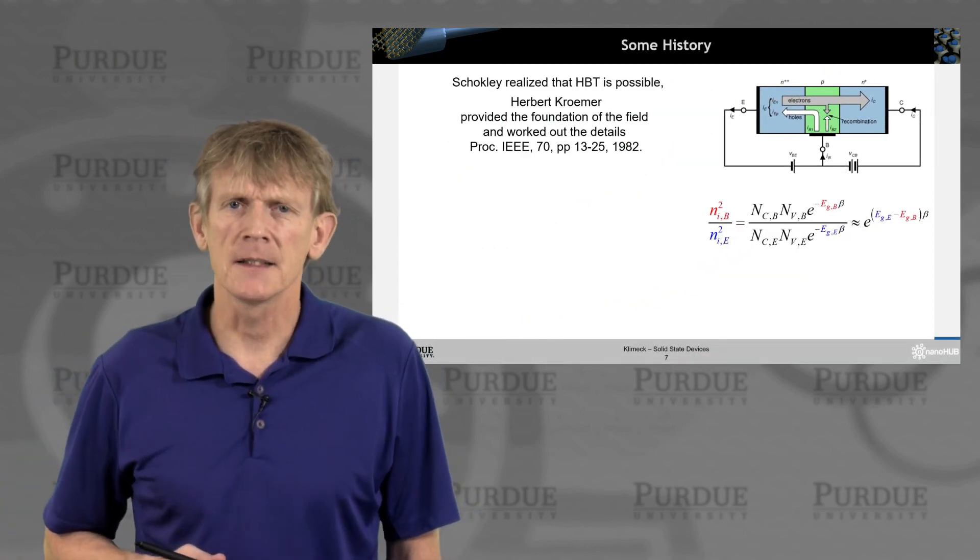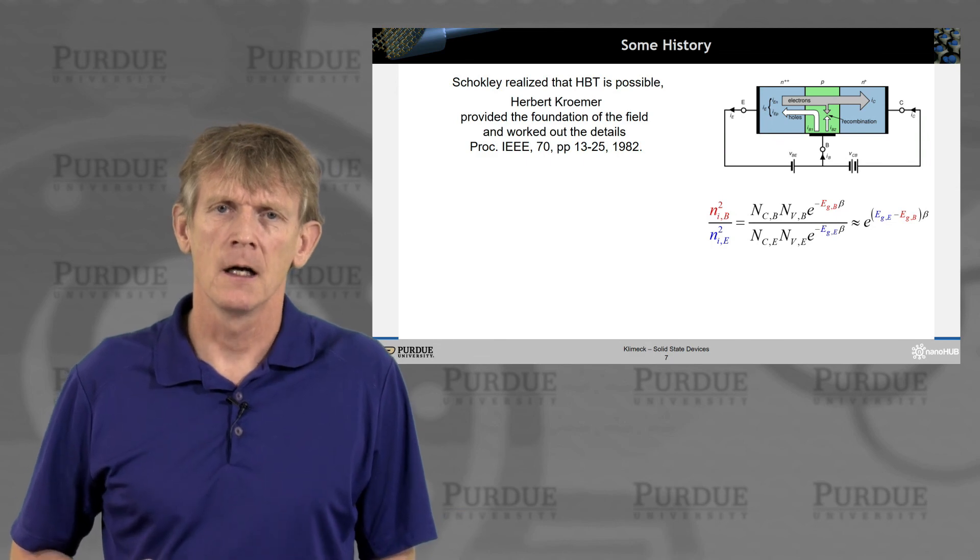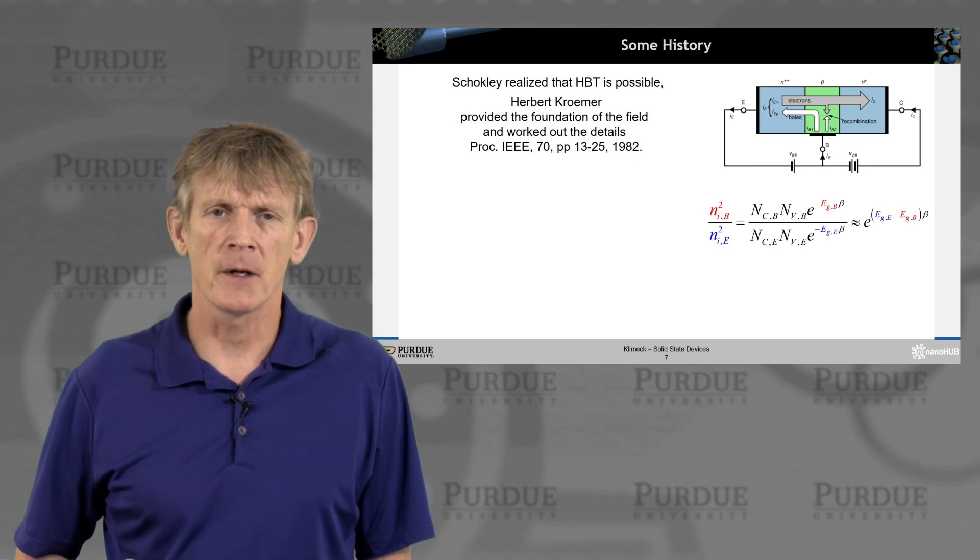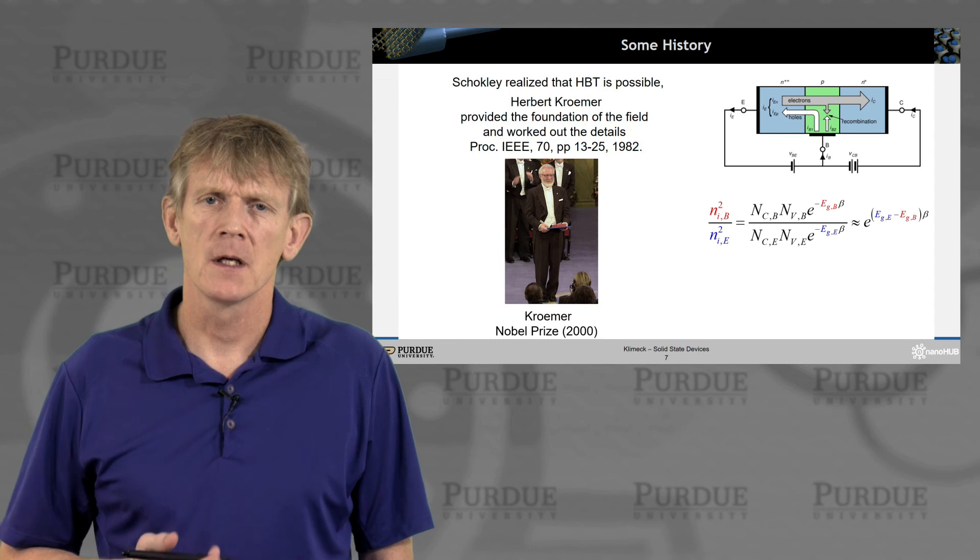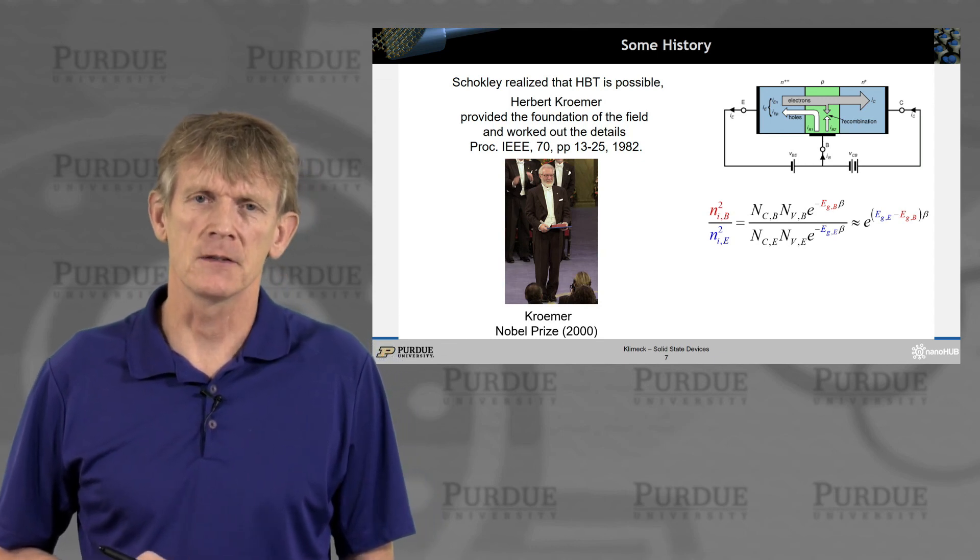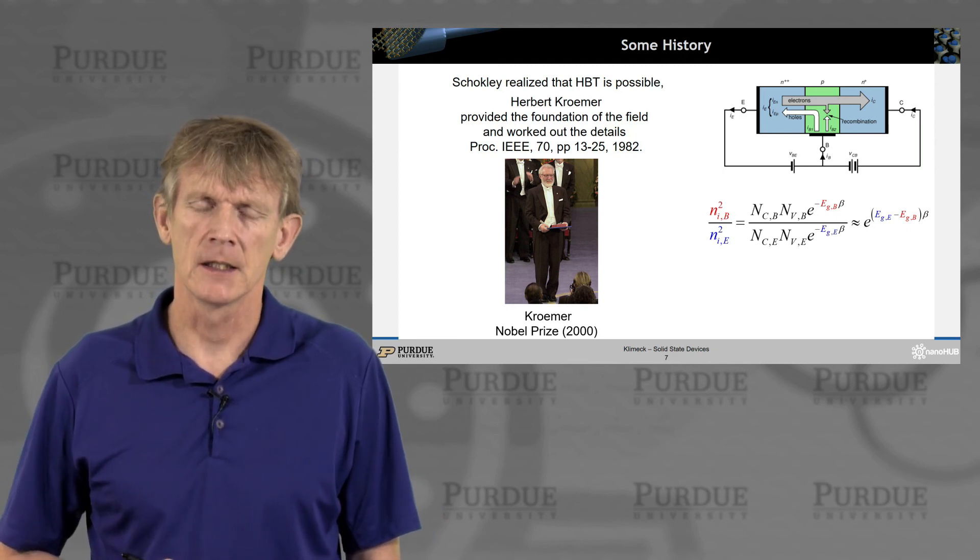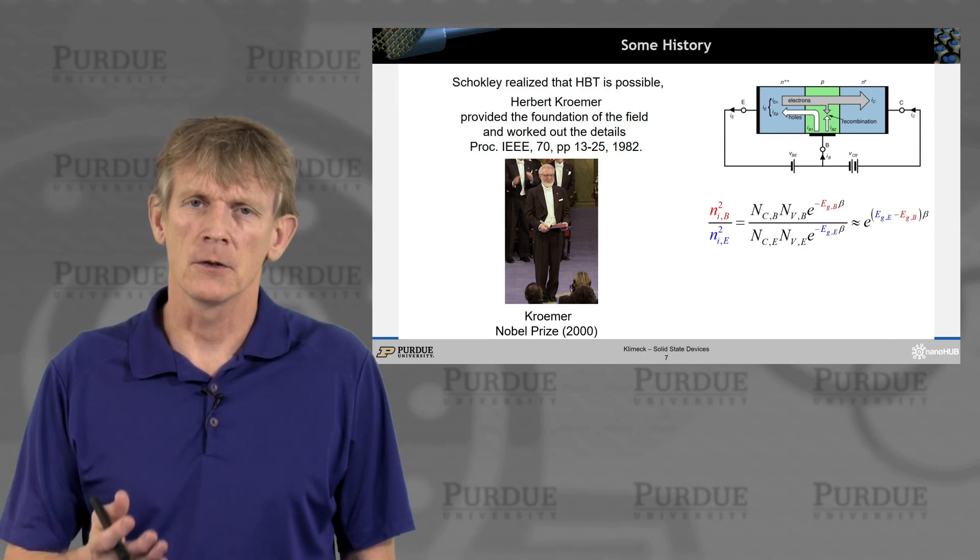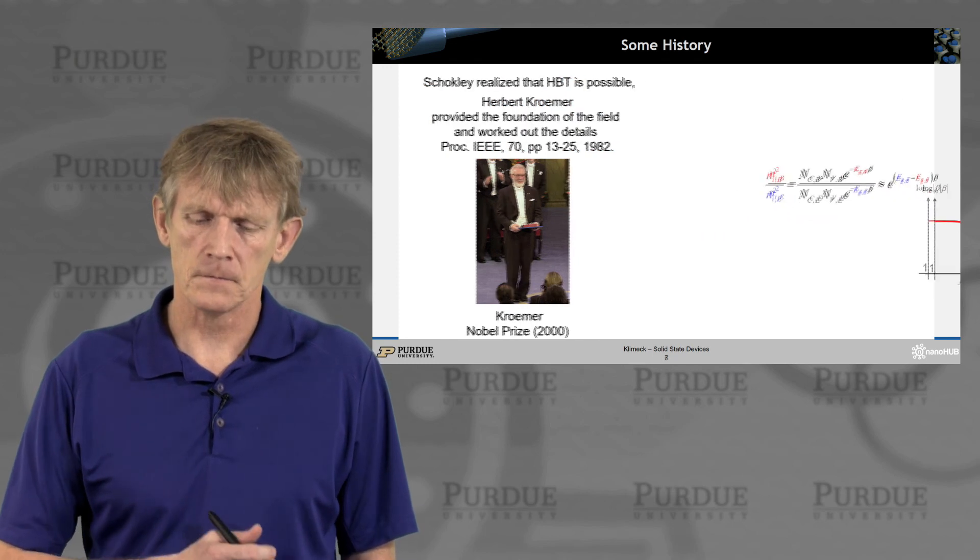Now, Shockley realized that an HBT is possible. Herbert Cromer provided the foundation of the field. He worked on the details. He did the experiments to really get this on its way. And he won the Nobel Prize in 2000 for the invention of this HBT and the heterojunction as such. He shared it with Alfarov, a Russian scientist who also worked on hetero structures. All right. But Herb Cromer really worked on the transistor piece.